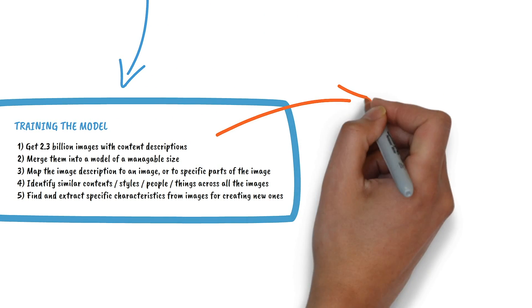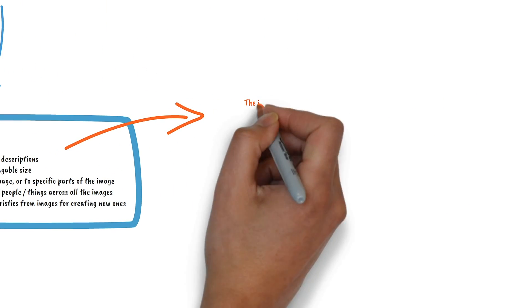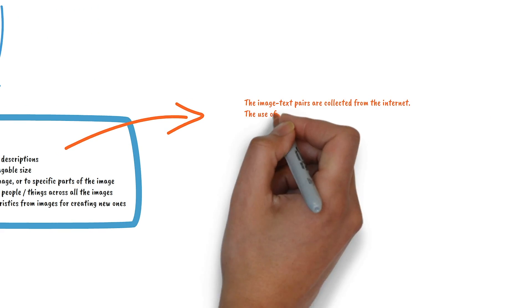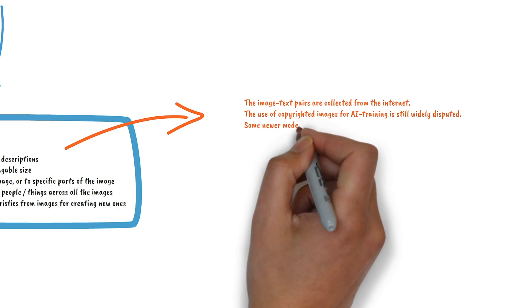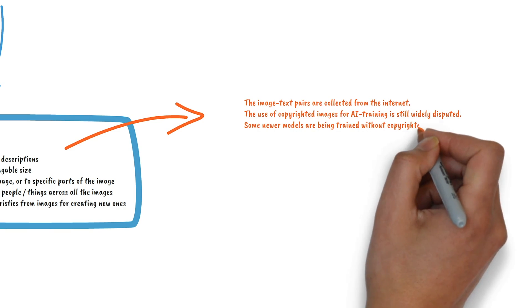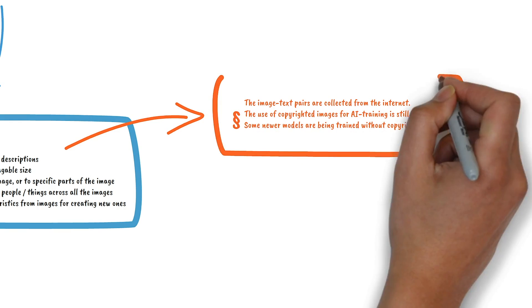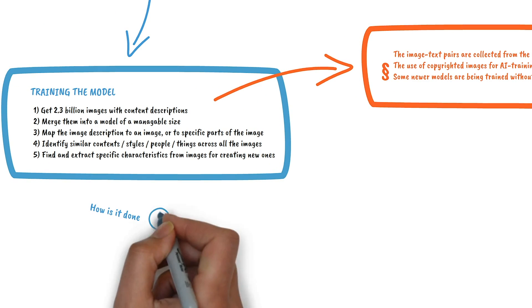The image text pairs were scraped from the internet using the LayOn5b dataset. There are still pending legal issues, so some newer models try to avoid copyrighted images. The next big question is, how is the training done?